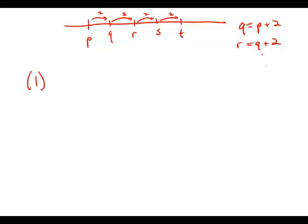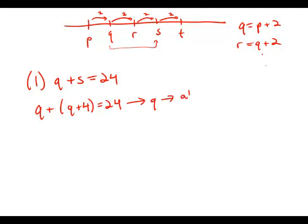So statement number one tells us that Q plus S equals 24. Well, if you notice, Q is four less than S. S is four bigger than Q. So really, this is Q plus Q plus four equals 24. Well, from that, we could solve for Q. And once we know Q, we could find all the values, and then we could find the mean. So that statement by itself is sufficient.